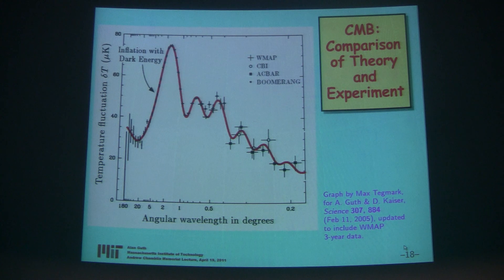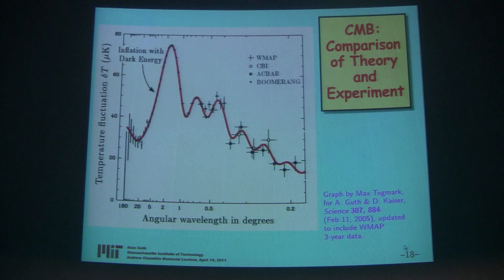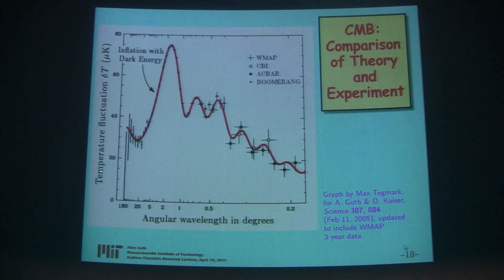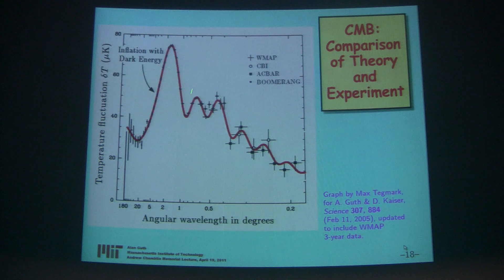Now in this case, wavelength is not measured in meters because you're not really seeing meters — what you're seeing is a pattern on the sky. So wavelength is measured in degrees. You see that a certain blip subtends 5 degrees, and that becomes a 5-degree contribution to the spectrum. On the graph, long wavelengths are to the left — this is 180 degrees on the left — and short wavelengths are on the right, 0.2 degrees. And there's this complicated pattern of wiggles that is predicted by the theory, and the data agrees beautifully.